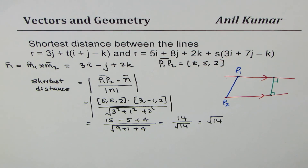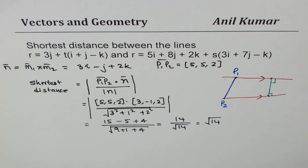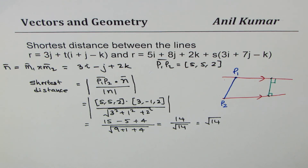In the first part, we showed that the scalar triple product is not equal to zero — if it were zero, the lines would have intersected and the distance would be zero. Since the scalar triple product is not zero, they are skew lines. We then took a point on each line and found the projection onto the common normal to get the shortest distance. I hope you find it useful — feel free to write your comments, share the videos, and thanks, all the best.